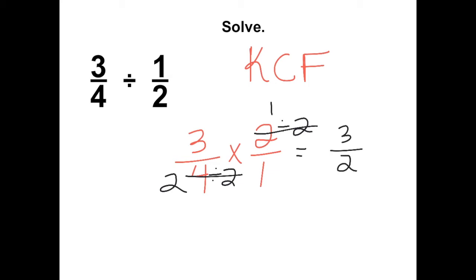Now we need to write our final answer as a mixed fraction. 2 goes into 3 one whole time. We're left with 1 and to carry over the denominator, 2. So we get 1 and 1 half.